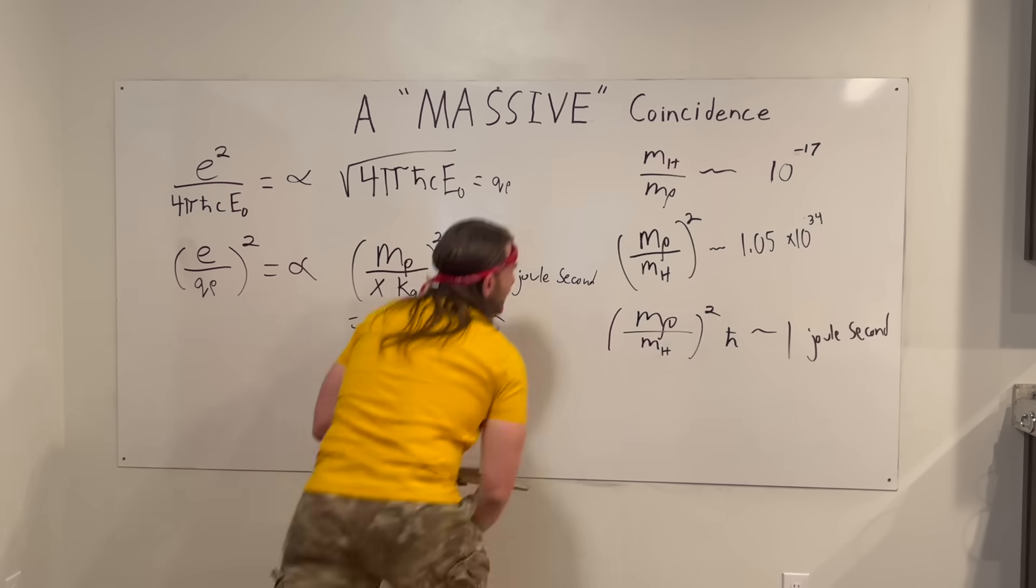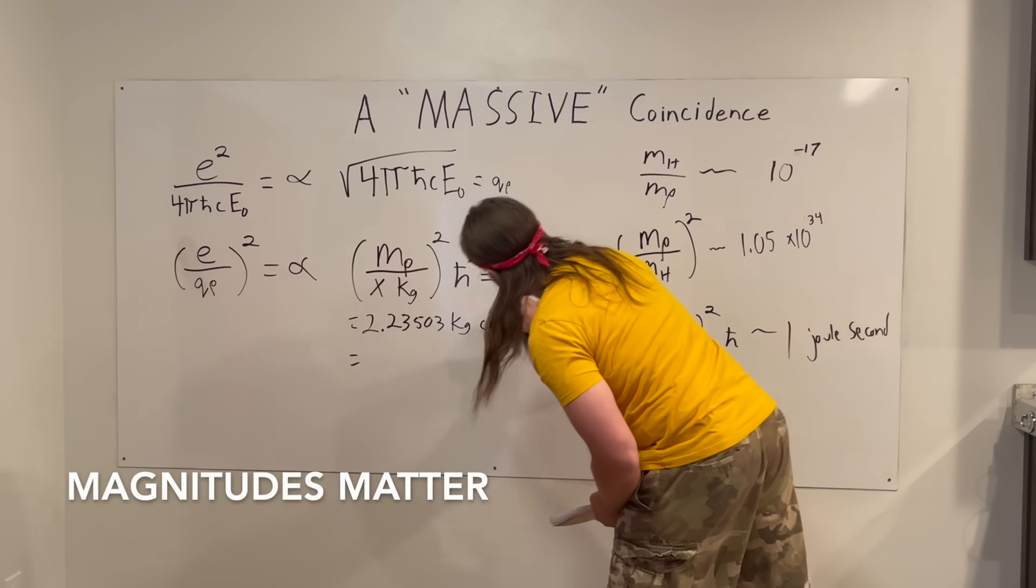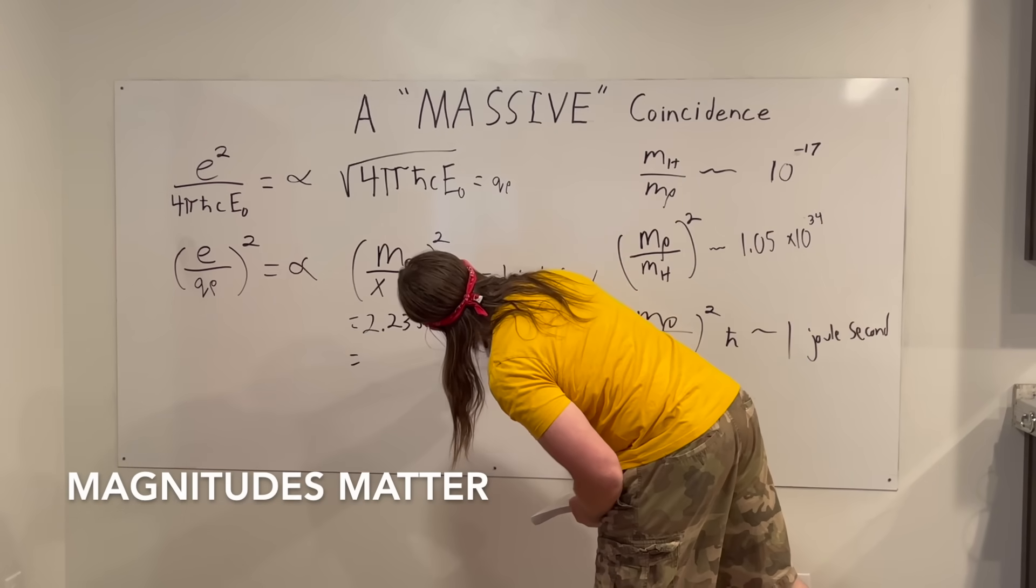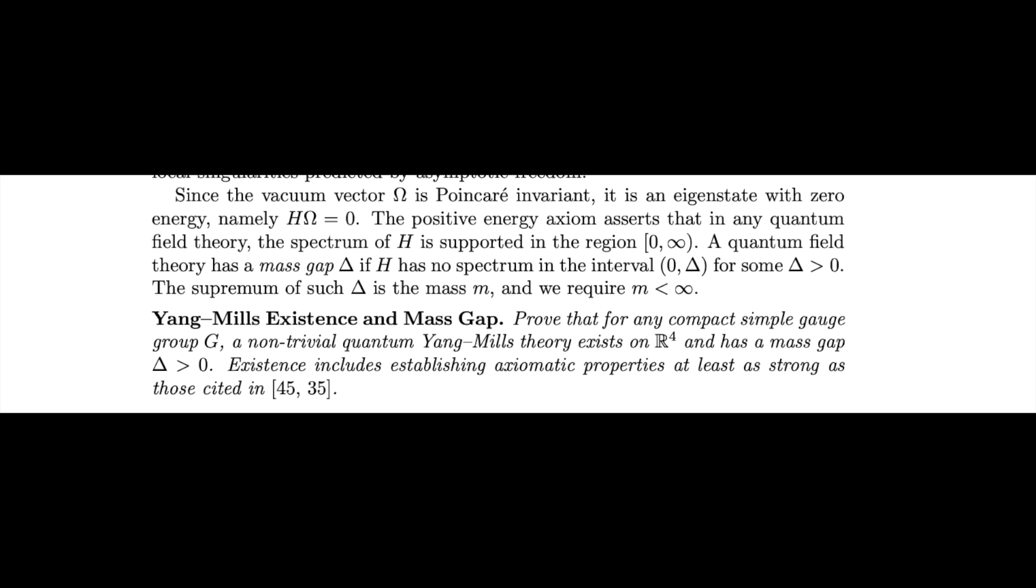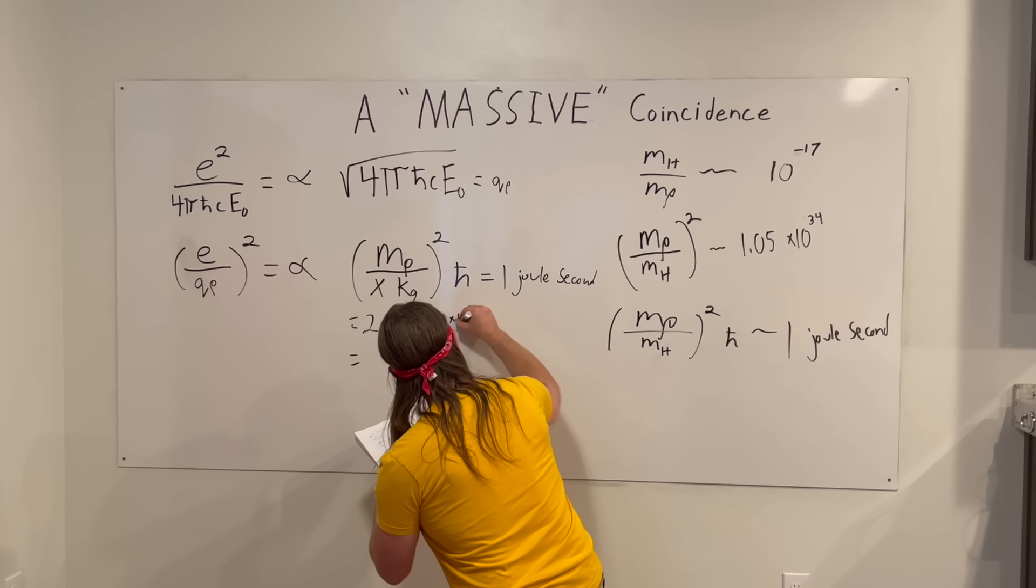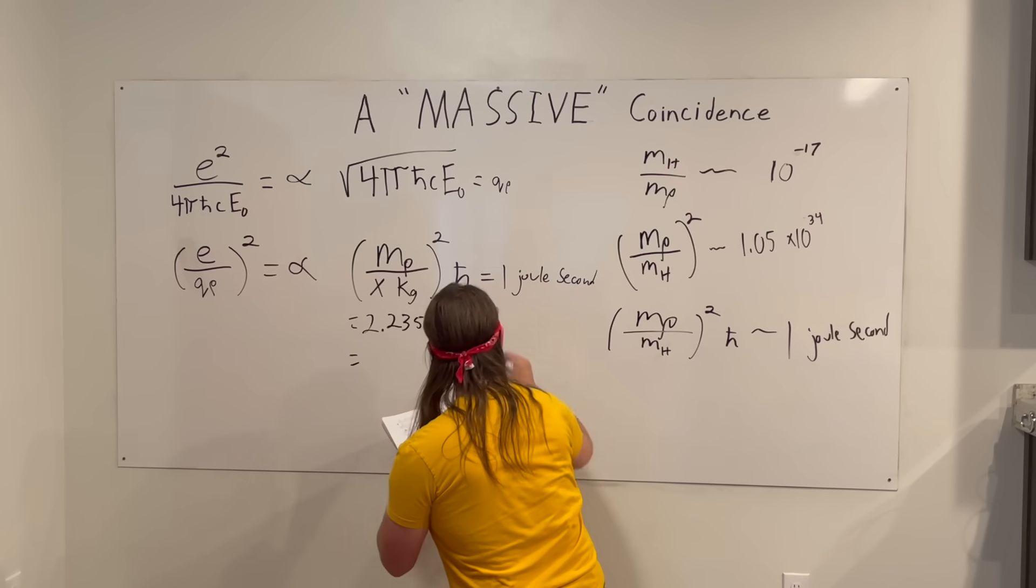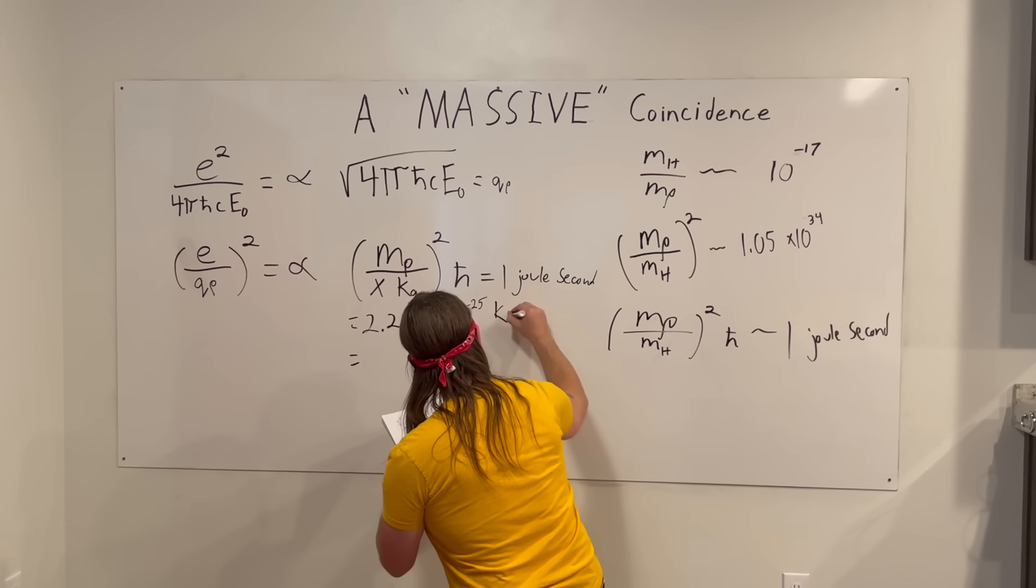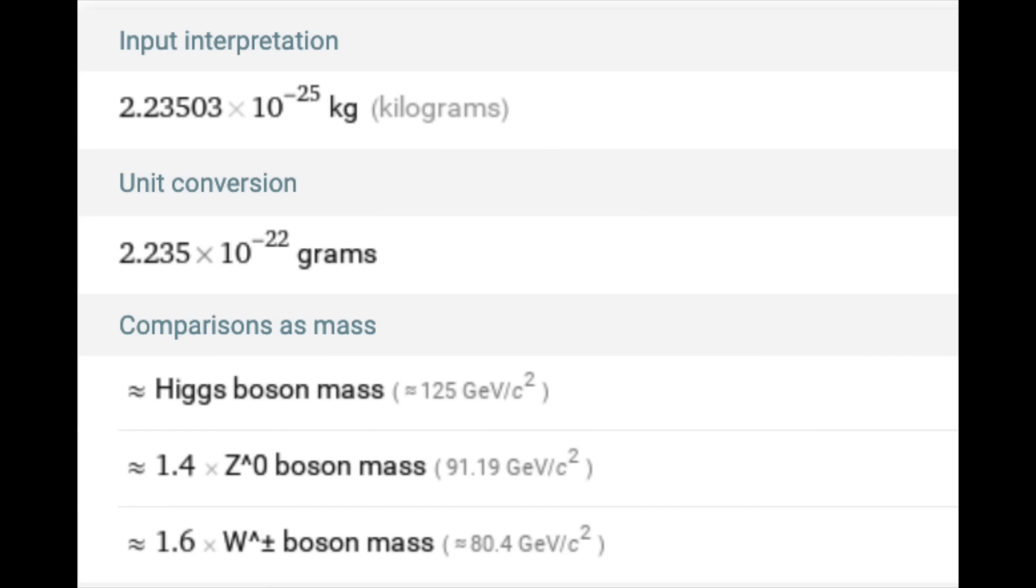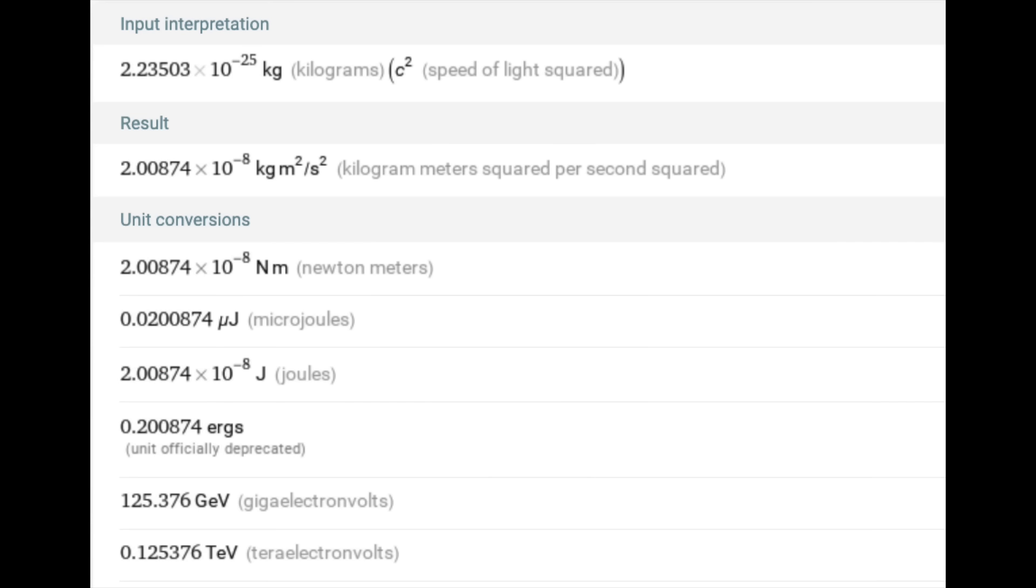That would be an incredibly large Planck mass. However, excuse me, Higgs mass, but it's greater than zero and less than infinity. That's apparently the important part. Minus 10 to negative 25 kilograms c squared, and that comes out to be approximately 125.37 GeV.